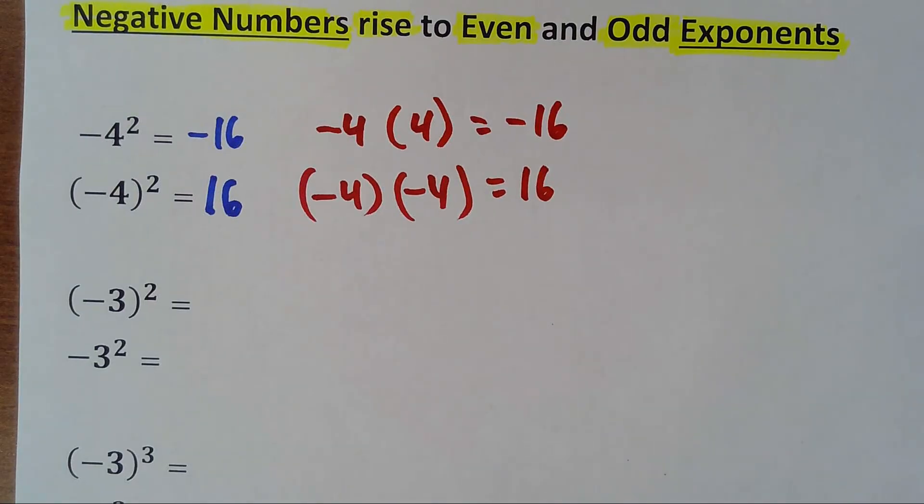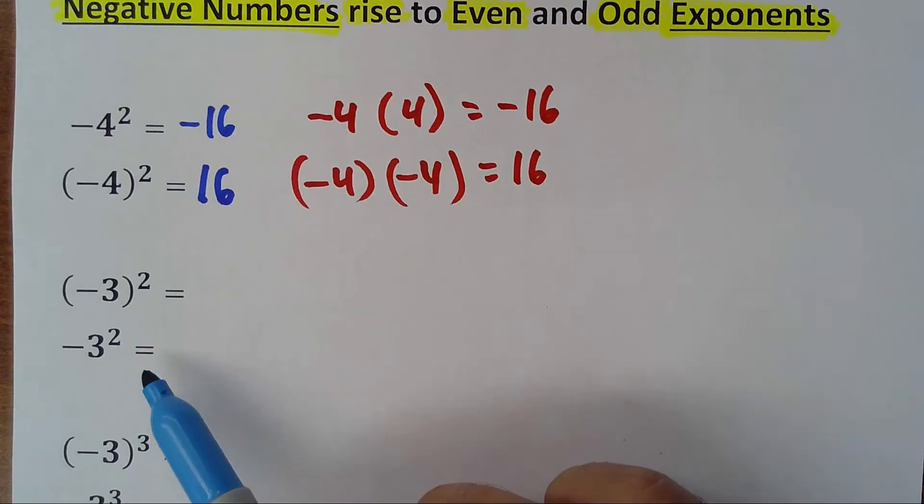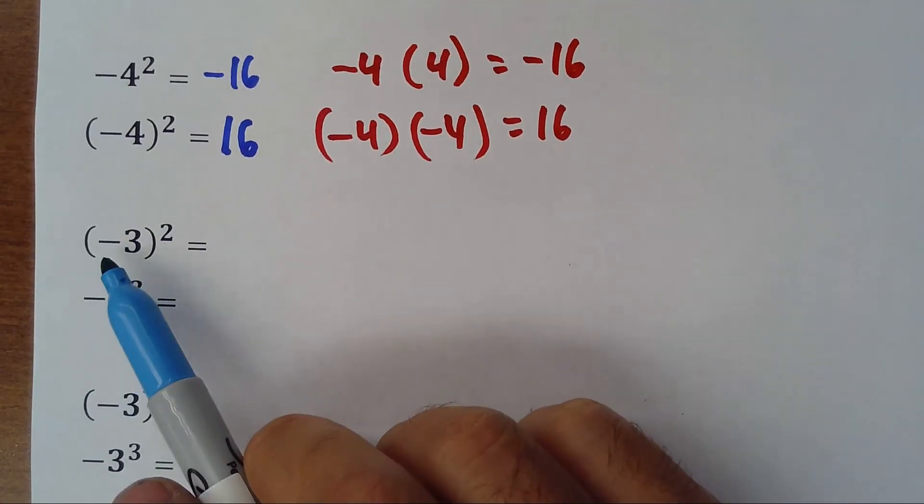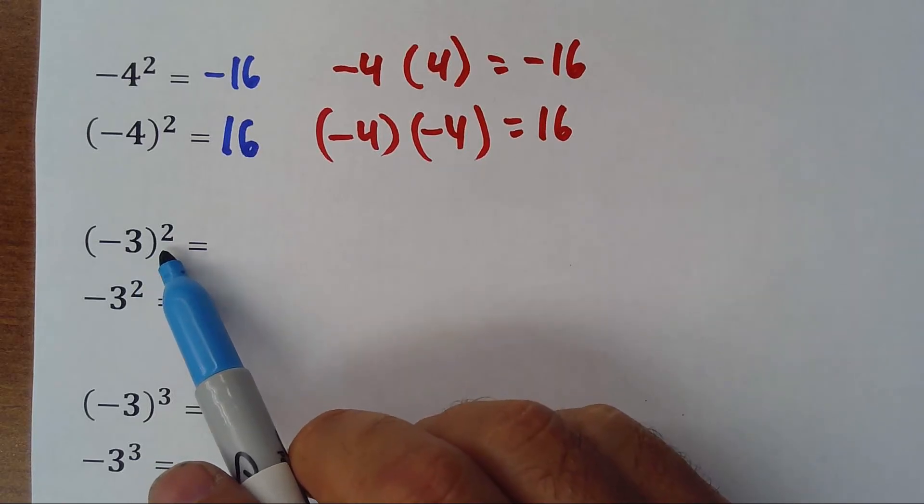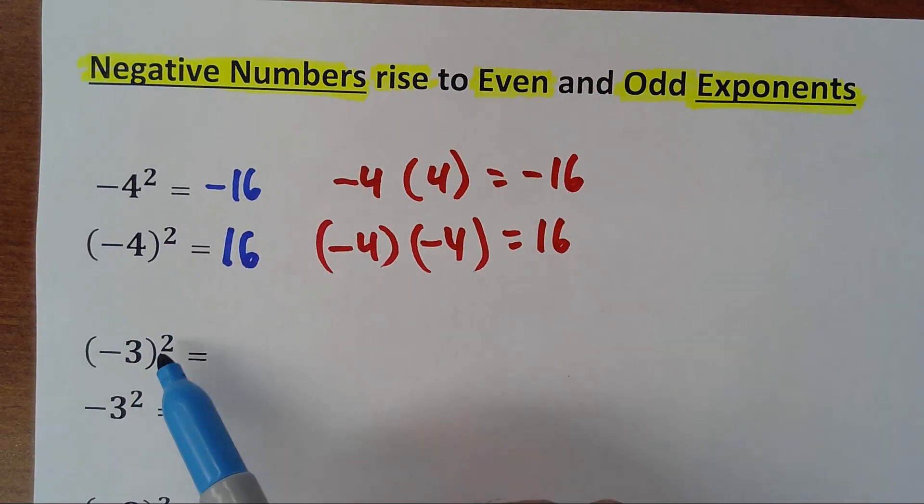Now, let's check some other examples. It's the same thing, that's the same process. So, when you have a negative number raised to an even exponent,